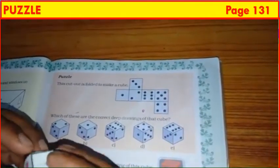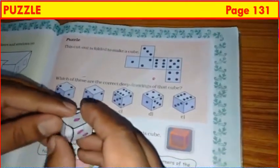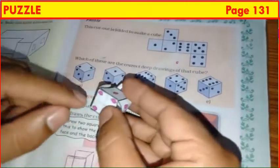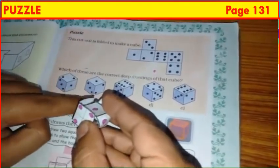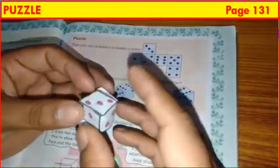Now, check figure B. See on the top, 1 is there. On the left side, 3 is there. On the right side, 2 is there. Here, I have 1 is there. Here, 2. But here, 4 is there. Means, this figure B is wrong.